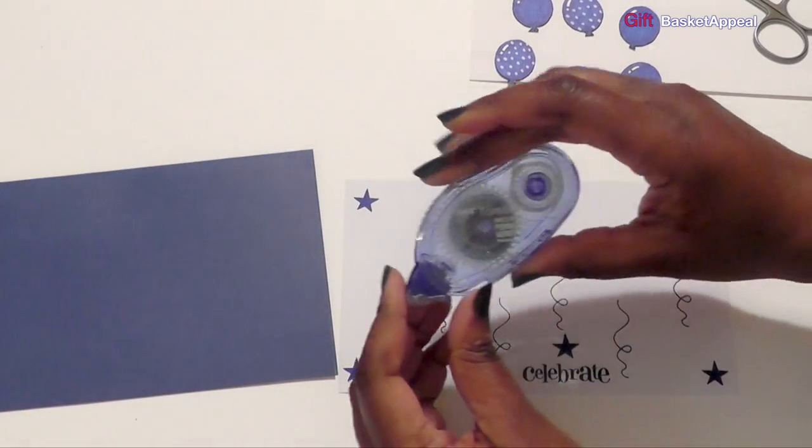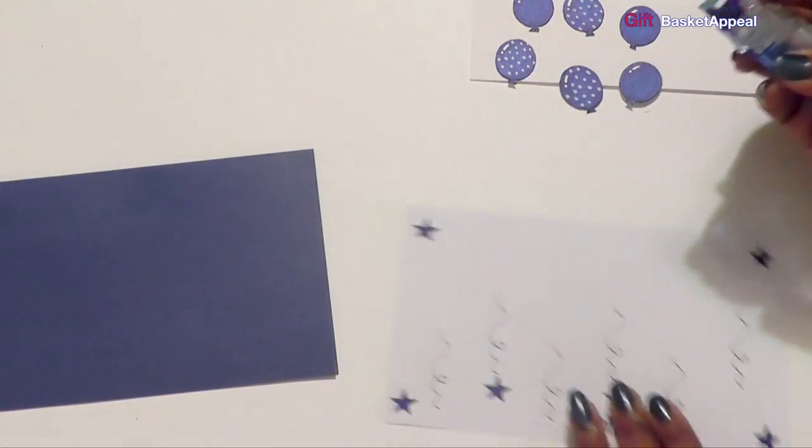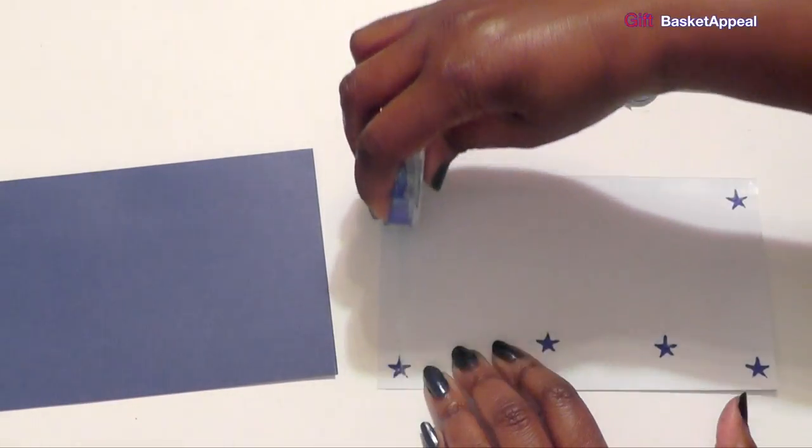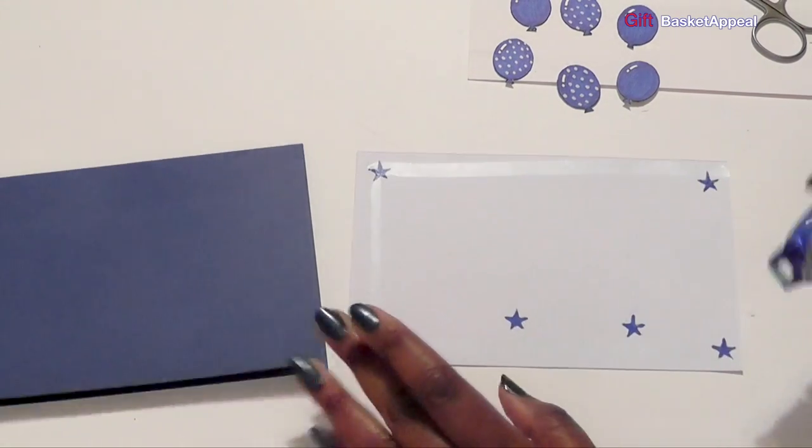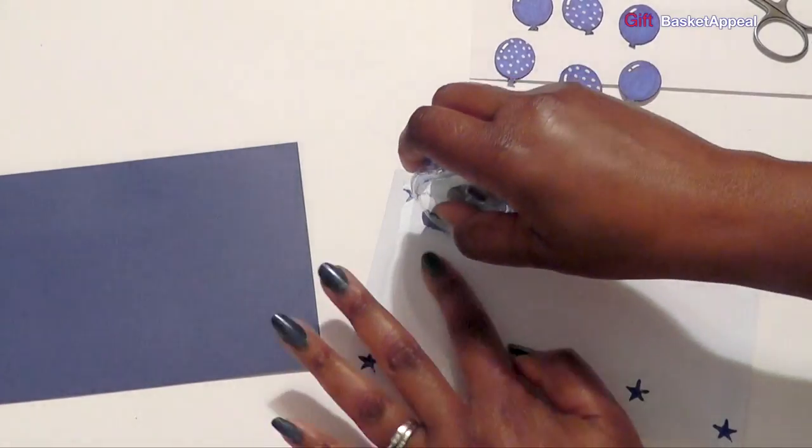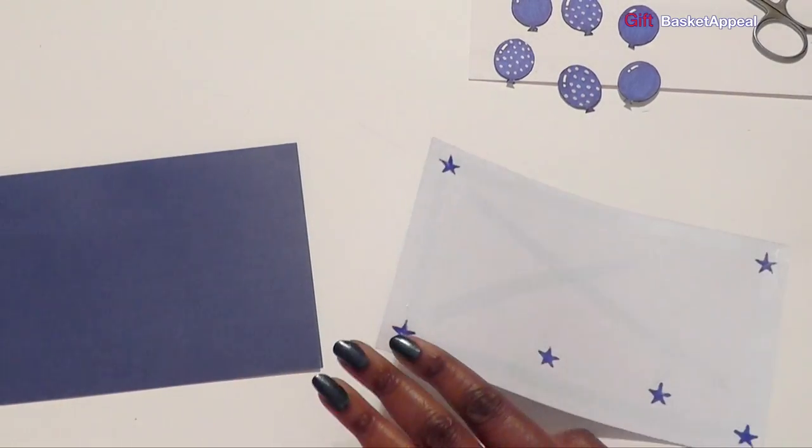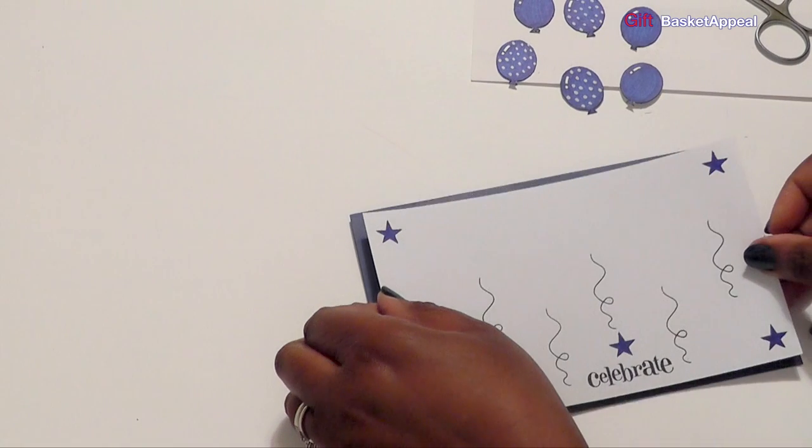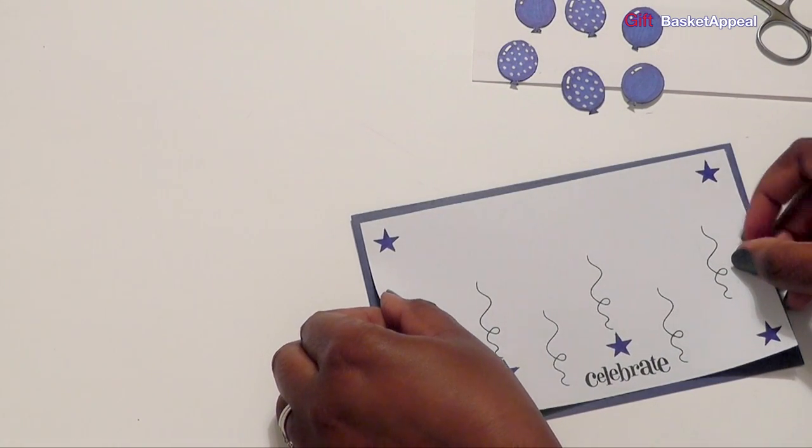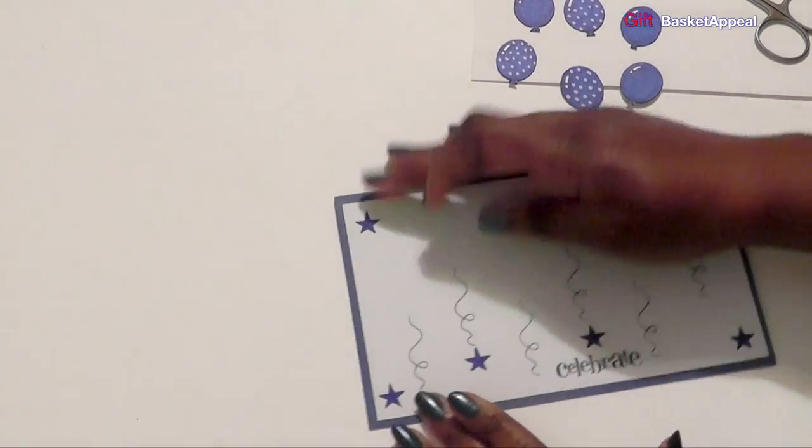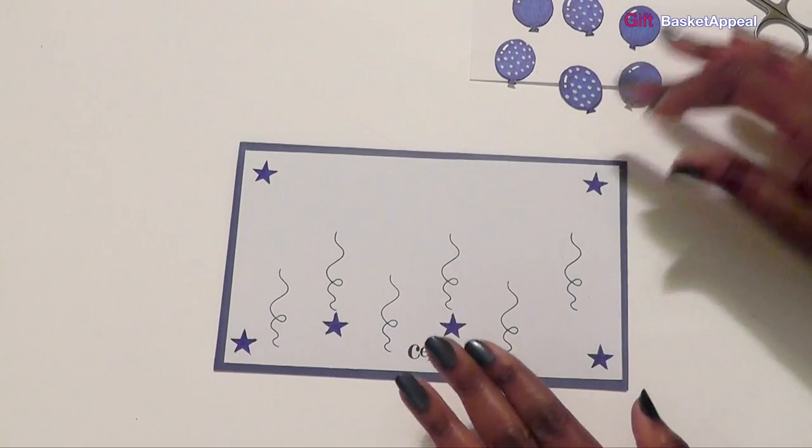I'm going to go ahead and use my Tombo Mono Permanent Adhesive. And I'm trying to pick up a few supplies as I go along. This whole card-making journey. I think I'll do something in the middle here. But I am really liking this adhesive. Make sure I get this on right. And that looks great so far. I'm really liking the way this is turning out. So that's what we have so far.